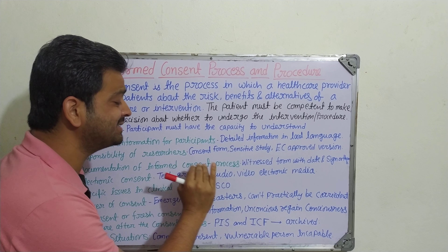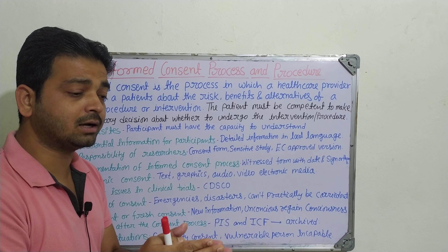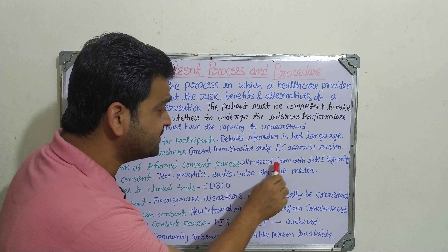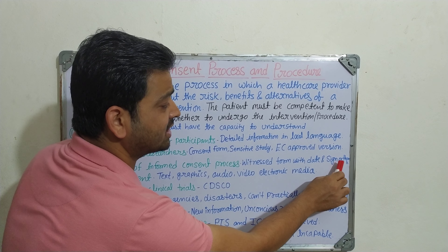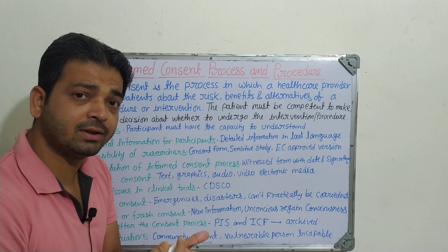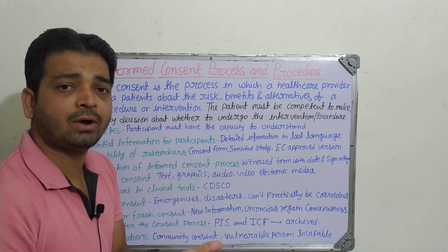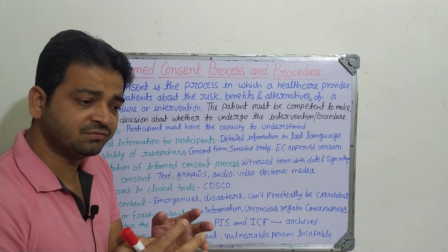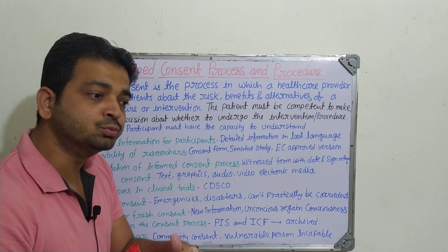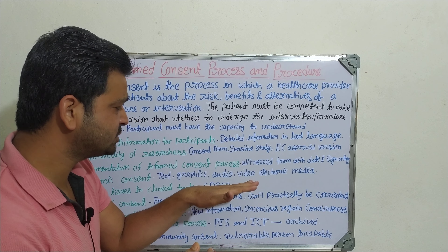The fourth one is documentation of the informed consent process. Everything has to be documented properly because these are risky things which they are going to do obviously, so there should be a record for everything. The witnessed form with date and signature, or thumb impression if they are not educated enough. A witness is supposed to be present, just as with an LIC maturity claim or any registry where a witness is required. Same here — a witness is required. They should sign that the participant has agreed to be part of the clinical trial, and the date and all details have to be recorded.